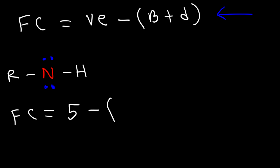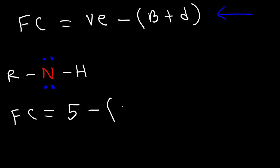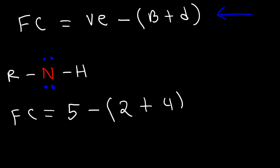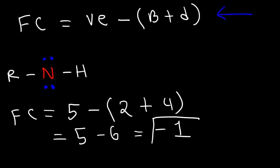In this structure, how many bonds are attached to nitrogen? Counting: one, two — so nitrogen has two bonds attached to it. And how many dots are attached to the nitrogen atom? Not lone pairs, but dots: one, two, three, four dots. Now two plus four is six, so it's going to be five minus six. Therefore, the formal charge on nitrogen is negative one.